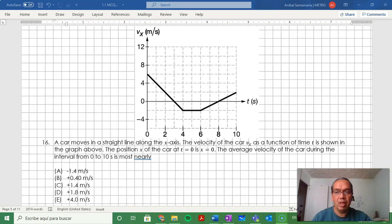Question number 60. A car moves in a straight line along the x-axis. The velocity of the car, vx, as a function of time t, is shown in the graph above. The position x of the car at t equals 0 is x equals 0. The average velocity of the car during the interval from 0 to 10 seconds is most nearly.